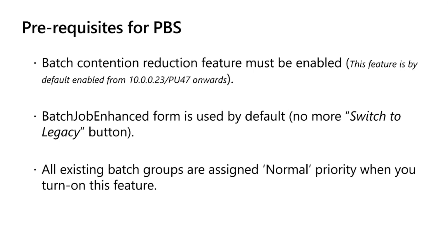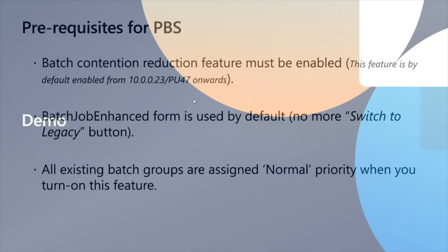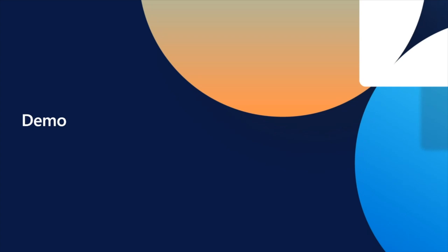When PBS is turned on, all existing batch jobs in your environment will be transferred to normal batch priority — that is the default. Within a few seconds of enabling PBS, a system batch job called 'system job to seed batch group association to batch job' runs, responsible for transferring all batch groups to normal batch priority. After that, Harsh will give a quick demo showing the features and different combinations of PBS.